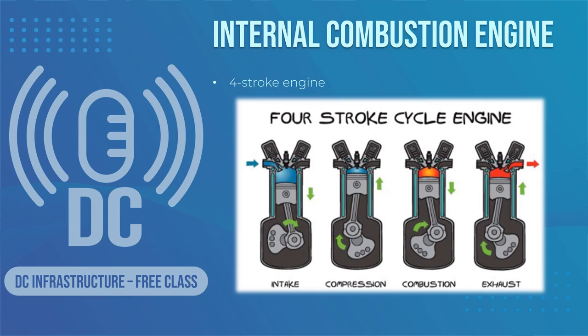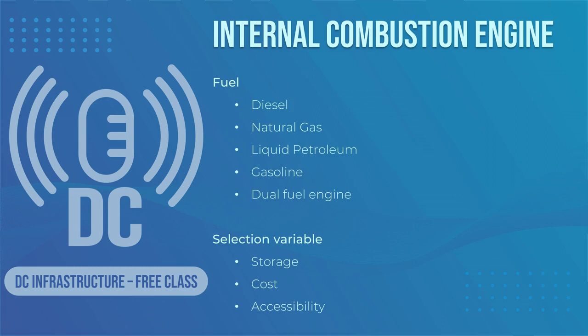Let's discuss the core attributes of prime movers. There are four main fuels used to drive the generator: diesel, natural gas, liquid petroleum, and gasoline. In some cases there are dual fuel engines. The choice of fuel type depends on variables such as storage, cost, and accessibility. Generator systems with diesel or natural gas engines are the most commonly used standby power generators to support data centers. The availability of fuel generally determines the type of standby generator selected.